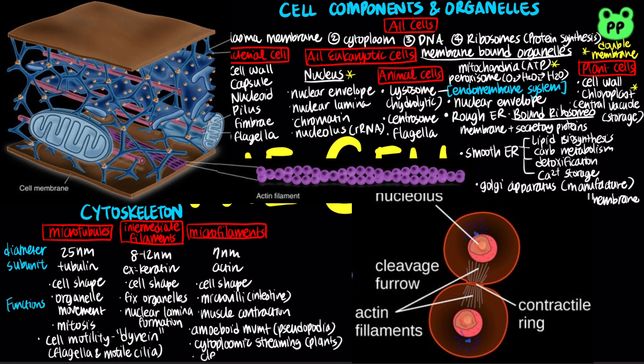Lastly, microfilaments can also be arranged in actin rings that form a cleavage furrow during cytokinesis and separate daughter cells.